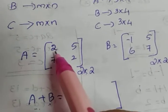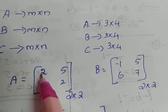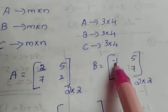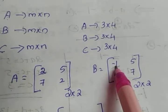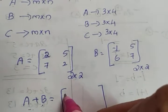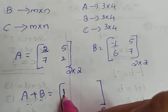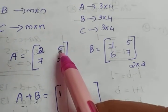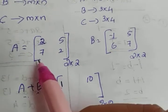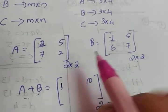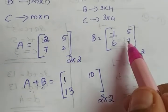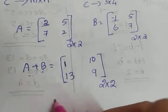To add, we add the corresponding elements in the same position. The element at first row, first column: 2 plus (−1) gives 1. Next, 5 plus 5 is 10. Moving to the second row: 7 plus 6 is 13. And the last element: 2 plus 7 is 9. So A plus B equals [1, 10; 13, 9]. That is how we add matrices — the condition is that the orders must be the same.